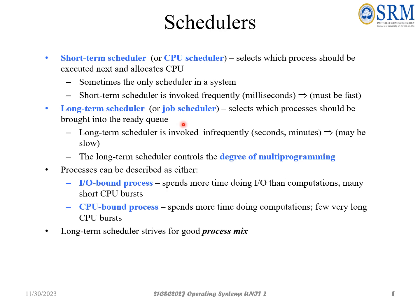In the five-state process model, we have five states: new, ready, running, termination, and waiting state. Here, 'new' is a process that was created. This new process is admitted to the ready state. When a new process is admitted to the ready state, we term it as the long-term scheduler or job scheduler, because it selects the process to be brought into the ready queue.